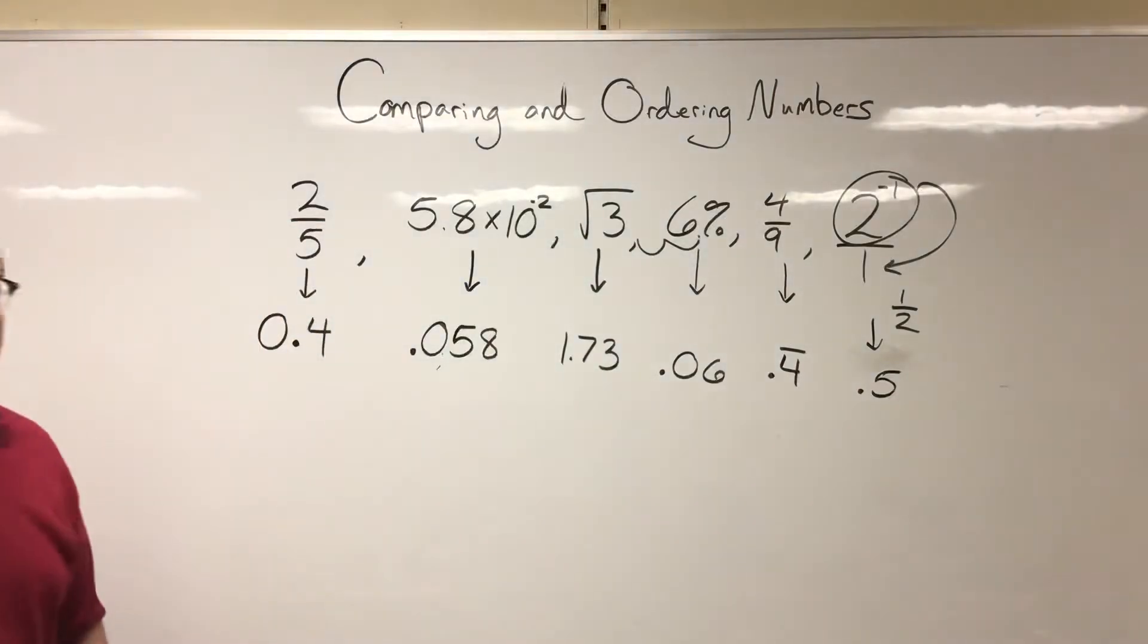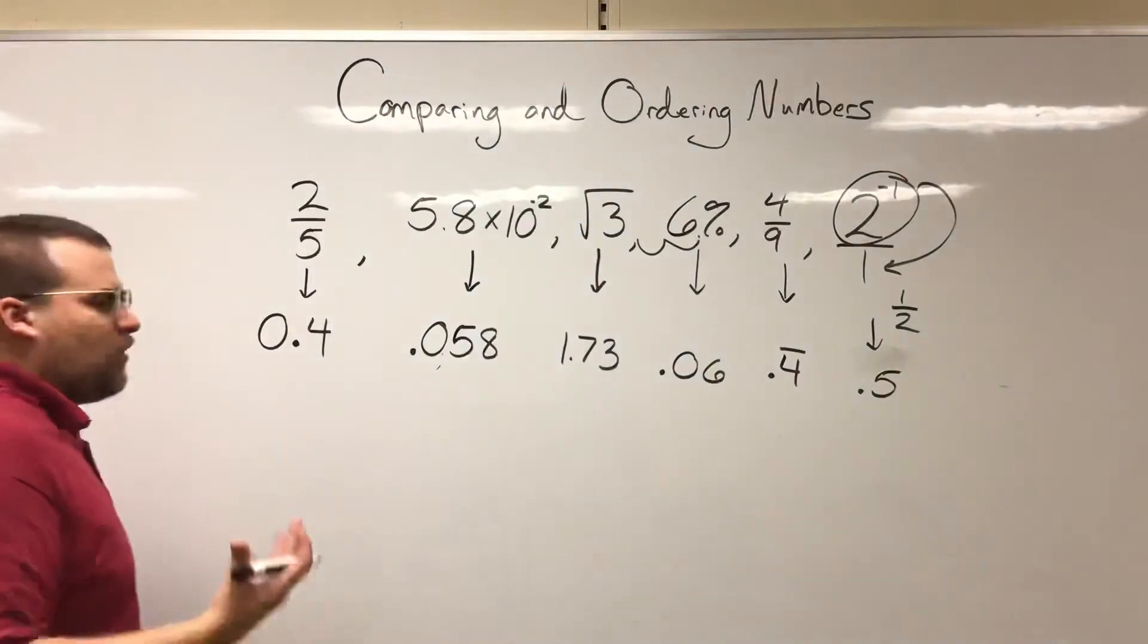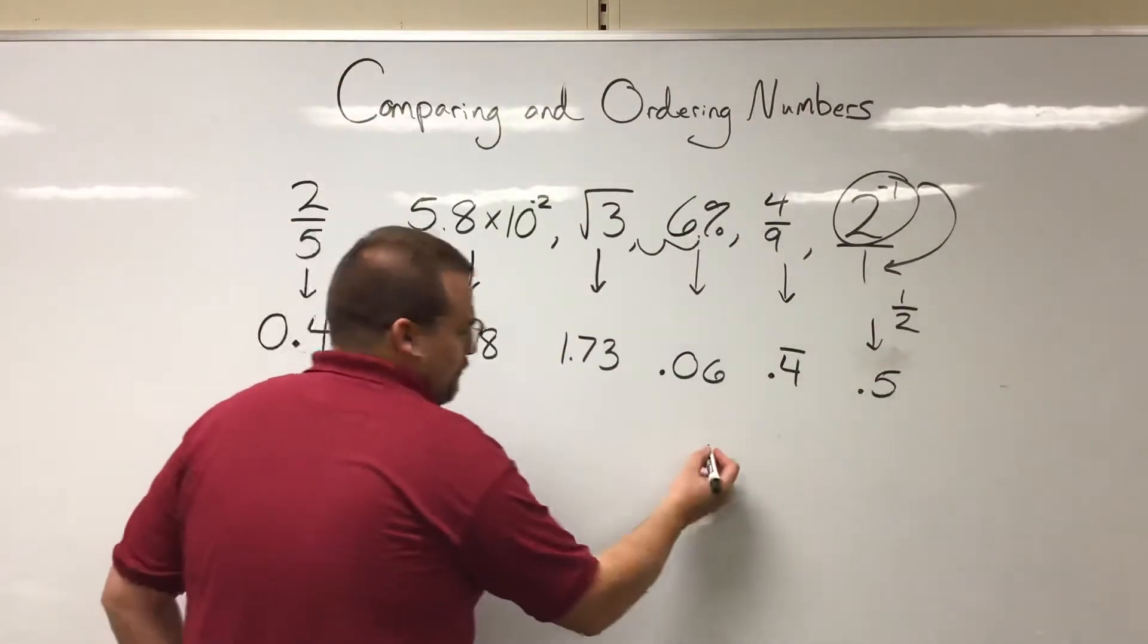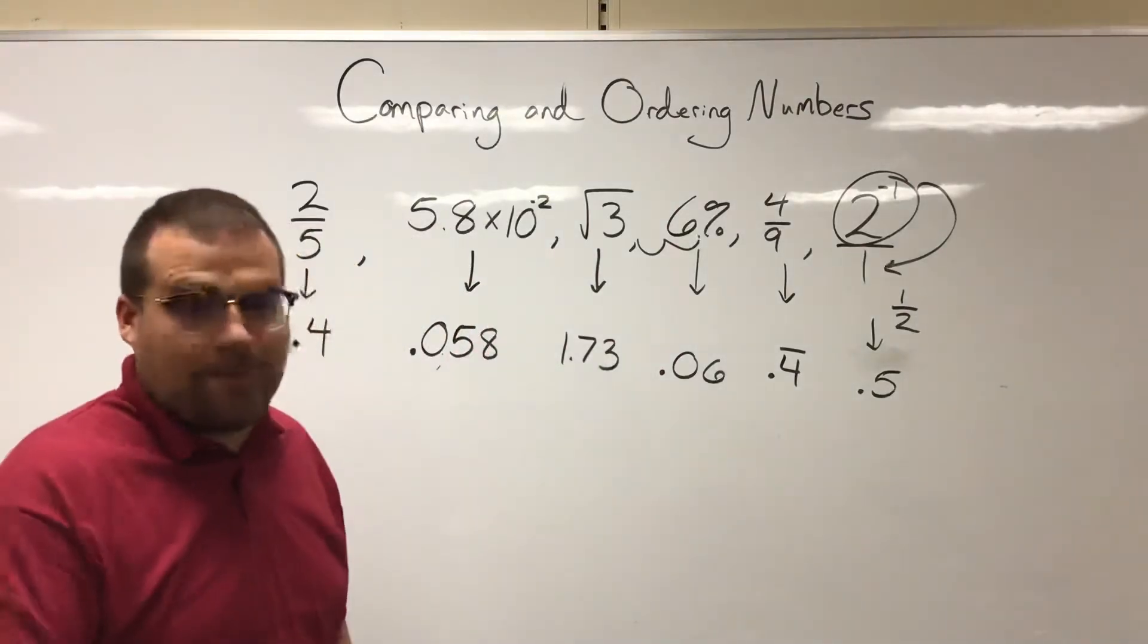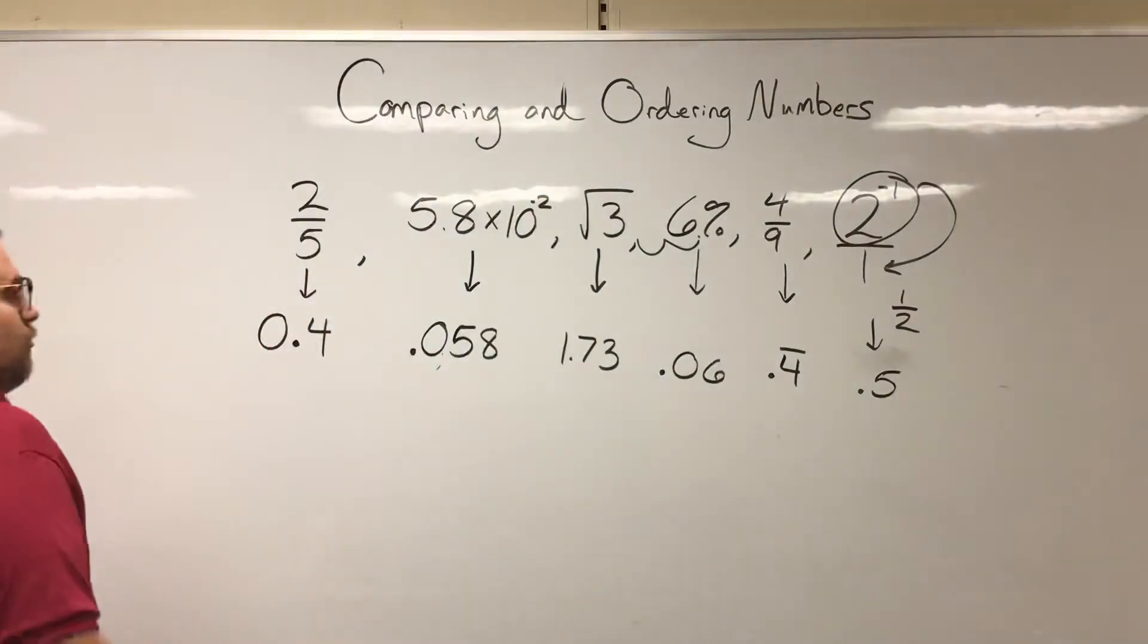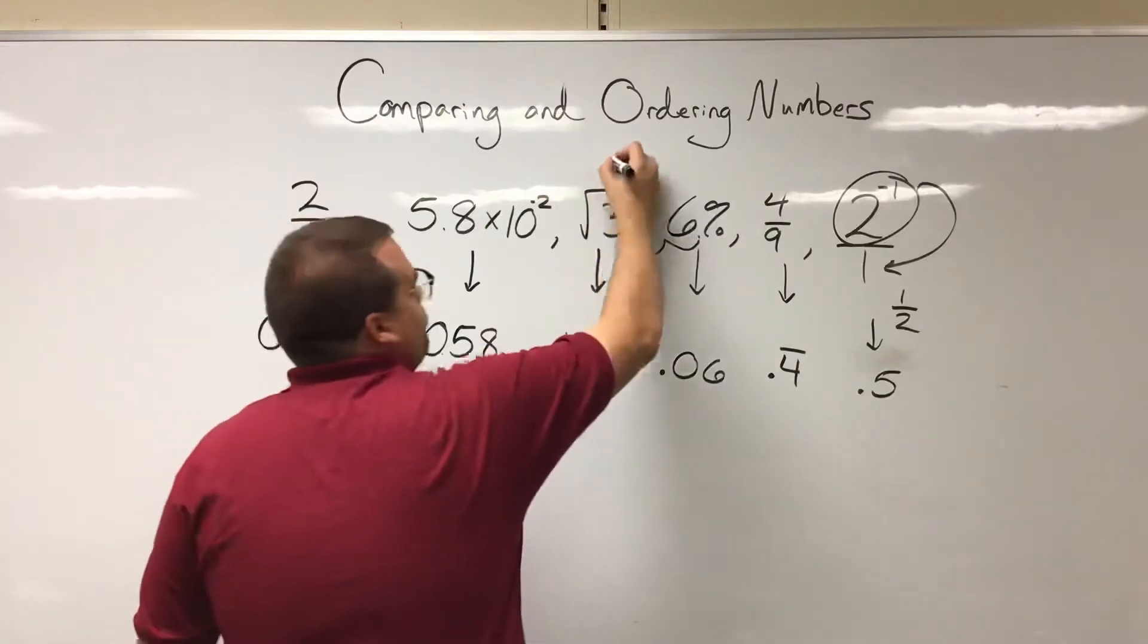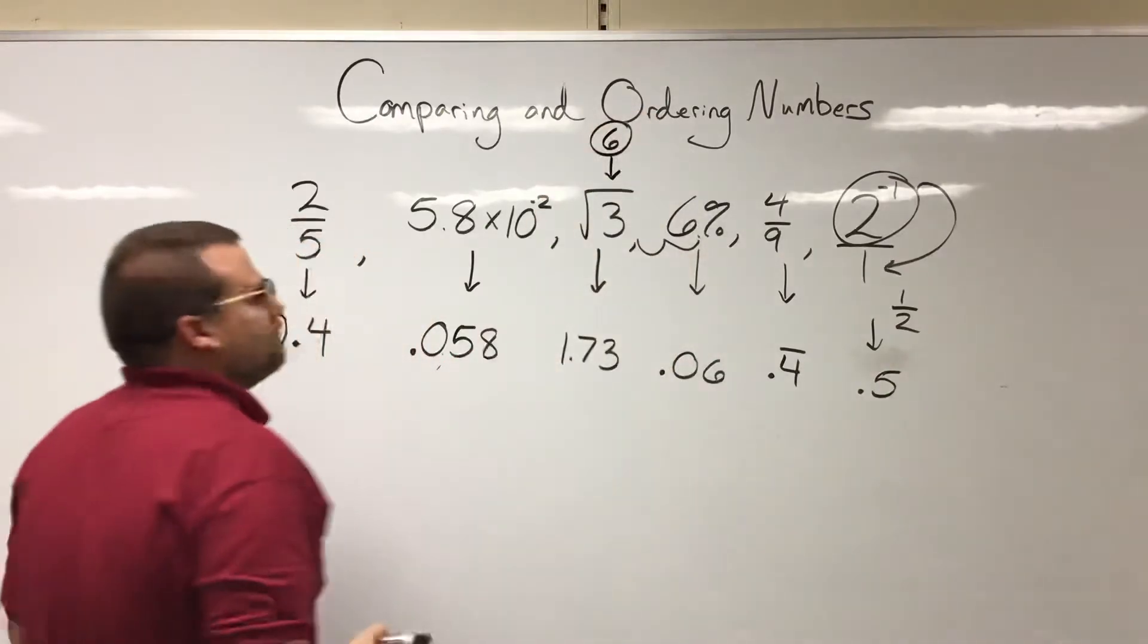So let's say we want to order these from smallest to largest. It's pretty easy to be able to pick out what the largest number here is. Of course it's 1.73. Like we have, you know, a whole number there. We have a one. This is the only one of those that's larger than one. So of these one, two, three, four, five, six numbers, from least to greatest, we know this is number six. The biggest one.